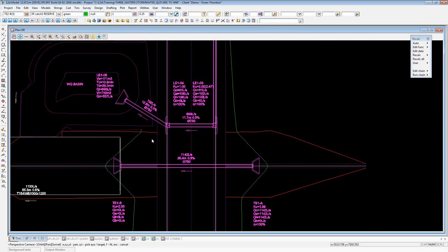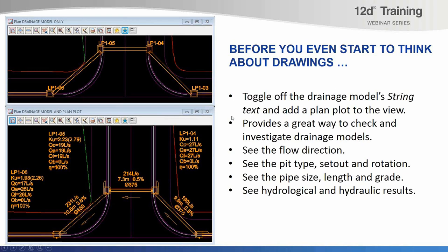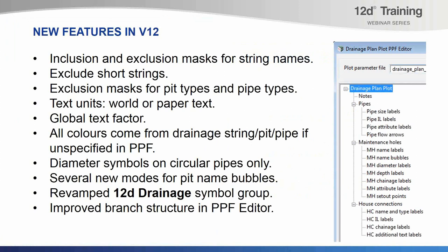I'll now talk a little bit about some of the new features in the version 12 PPF editor before we actually go and use it and produce something more interesting. There are about 10 items on the list, and rather than just talking over a slide, I'm actually going to take you through in 12D through the PPF editor and the branch structure to show you where each of these items can be found.